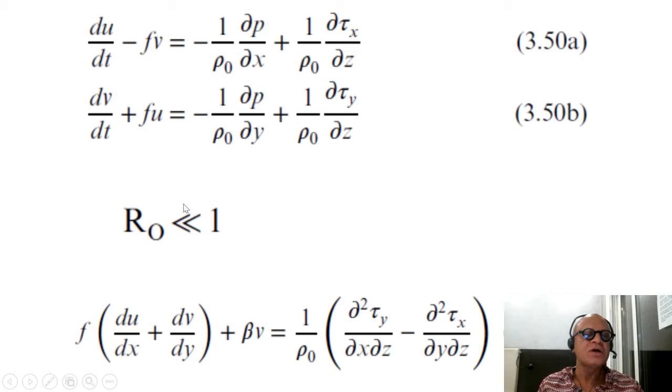We assume that the flow is at a very low Rossby number, so the acceleration terms can be set to zero.